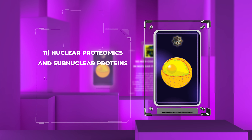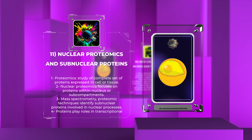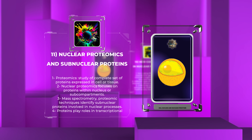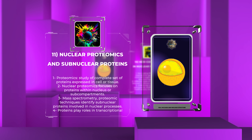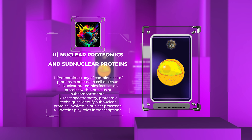Proteomics, the study of the complete set of proteins expressed in a cell or tissue, has significantly contributed to our understanding of nuclear biology. Nuclear proteomics aims to identify and characterize the proteins that reside within the nucleus or its sub-compartments. With advances in mass spectrometry and proteomic techniques, researchers have identified numerous subnuclear proteins involved in various nuclear processes. These proteins play diverse roles, including transcriptional regulation, RNA processing, DNA repair, and chromatin organization. Elucidating the functions and interactions of subnuclear proteins provides insights into the intricate dynamics and complexity of nuclear processes.